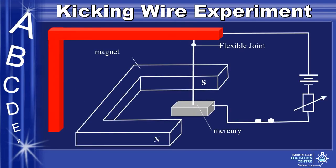Recall Fleming's left-hand rule. The current points downwards as shown. For the magnetic field, the direction depends on the poles of the magnet. All magnetic field lines leave the north pole and move toward the south. Hence, the magnetic field is drawn as shown. By Fleming's left-hand rule, the force will be directed towards the right.